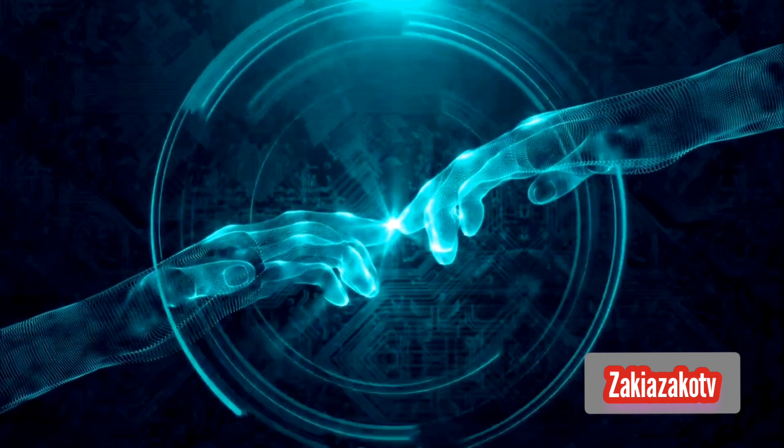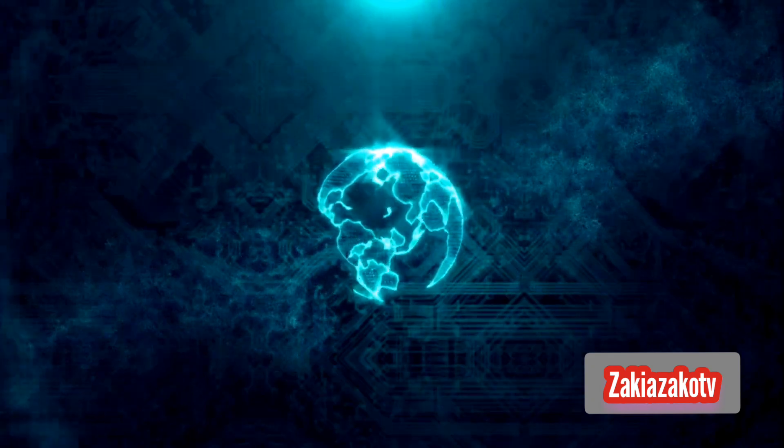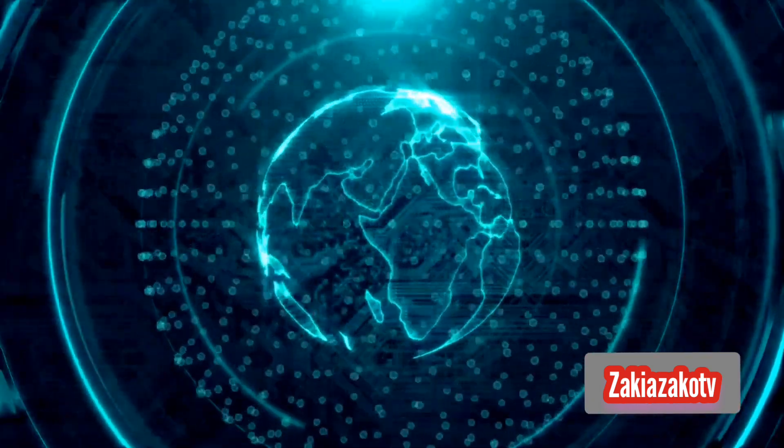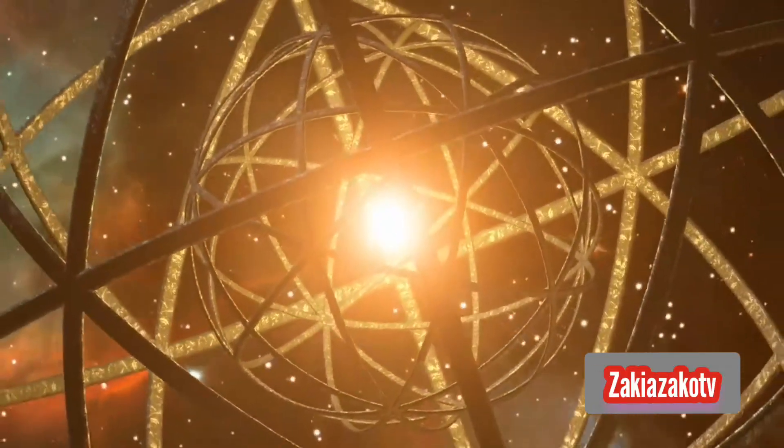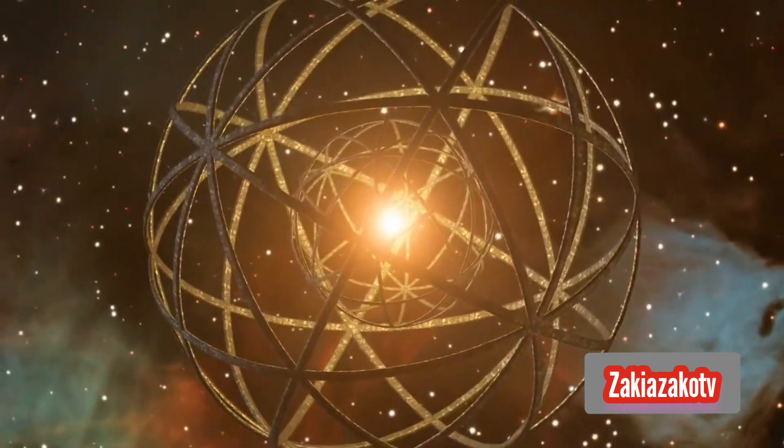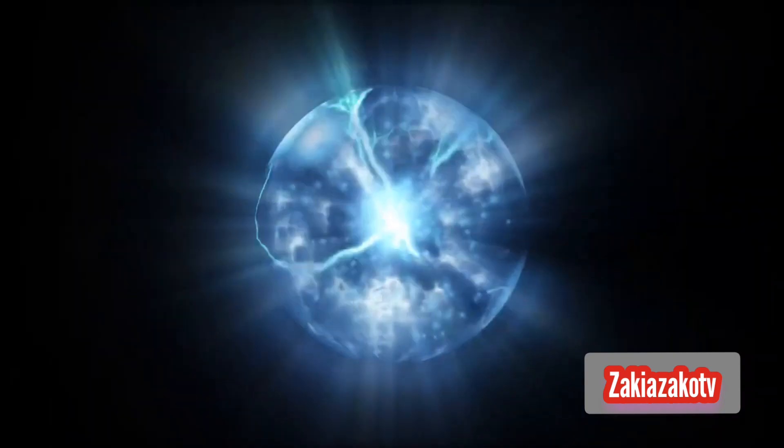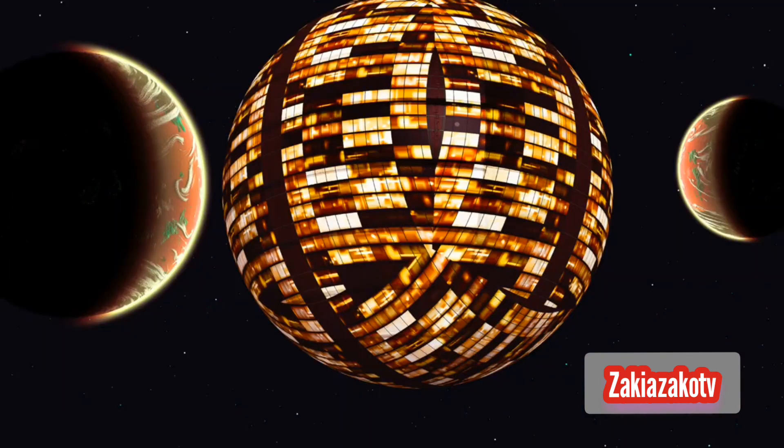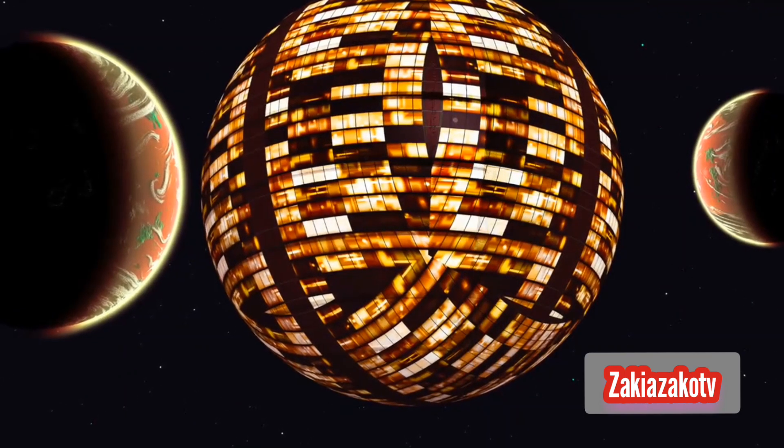When we imagine finding alien life in the universe and trying to quantify just how advanced that life is, we so often default to the Kardashev Scale, and not without good reason. Introduced by the astrophysicist Nikolai Kardashev in the 1960s, it famously ranks a civilization's level of advancement based on how much energy they're able to harness. But there are other ways of thinking about it, even if Kardashev's method is still widely used in the search for extraterrestrial intelligence.